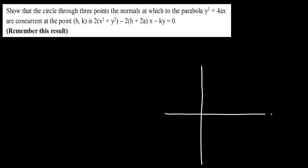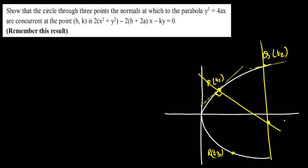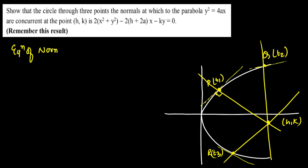We start with the parabola y² = 4ax. Let's say this is our y-axis and x-axis with the parabola drawn. We select three points: P with parametric value t1, Q with parametric value t2, and R with parametric value t3. At each point the tangent and normal are drawn, and the three normals are concurrent at the single point (h, k).